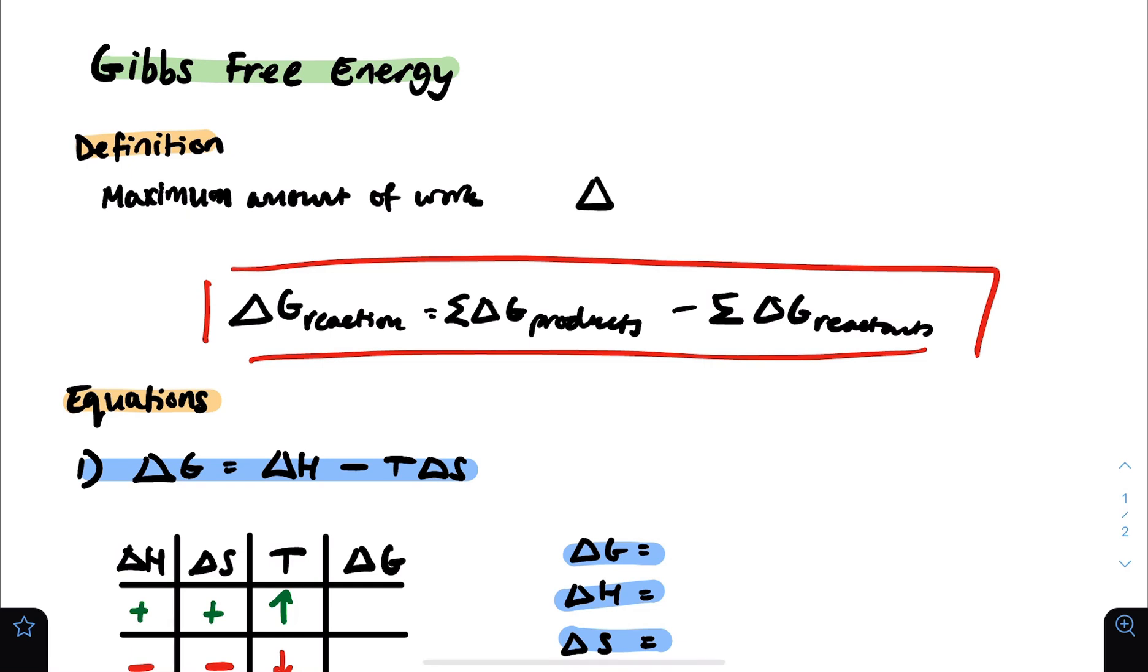Gibbs free energy can be represented by delta G. You might also see it with a symbol on top. Whatever the case is, you should know how to interpret it. So basically, if delta G is negative, that means it's spontaneous. And a spontaneous reaction is a reaction which can take place under the given conditions without any interference or without any external energy required.